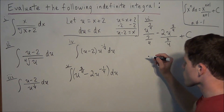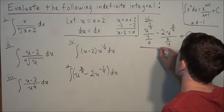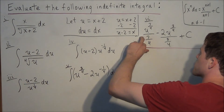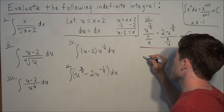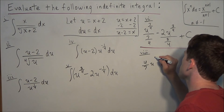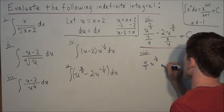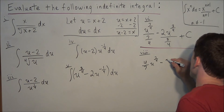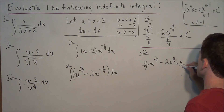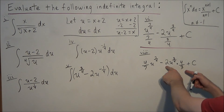Now we simplify. We don't want to write division by fractions, so we multiply by the reciprocals instead. Dividing by seven-fourths is the same as multiplying by four-sevenths, giving us four-sevenths times u to the seven-fourths. For the second term, the reciprocal of three-fourths is four-thirds, giving us minus 2 times four-thirds times u to the three-fourths, plus c. We also need to simplify by multiplying 2 and four-thirds.